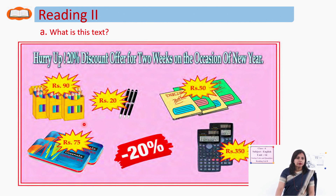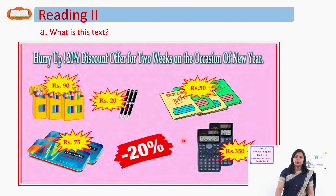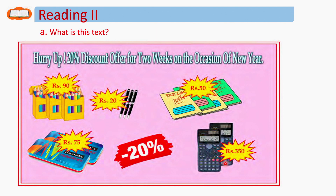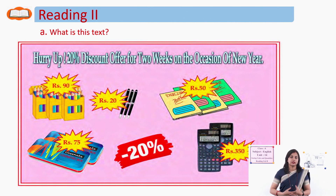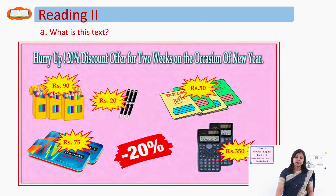What are the prices of items in the advertisement? Pencil colors cost 90 rupees. Pen costs 20 rupees. Exercise books or notebooks cost 50 rupees. Geometry box costs 75 rupees. Calculator costs 350 rupees. But when you go, you have to pay less than these amounts because there is a 20 percent discount on all items. This is an advertisement showing the discount offer of this stationary shop on the occasion of New Year.